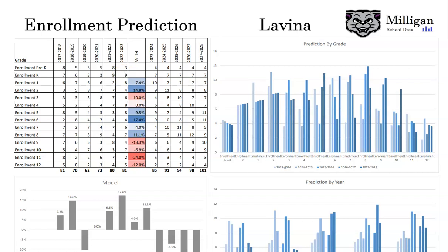We can assume that it will grow by 14.8% and there'll be 11 students in second grade in 24-25, and you kind of extend that out throughout the years there. That's the way the predictive model is built.